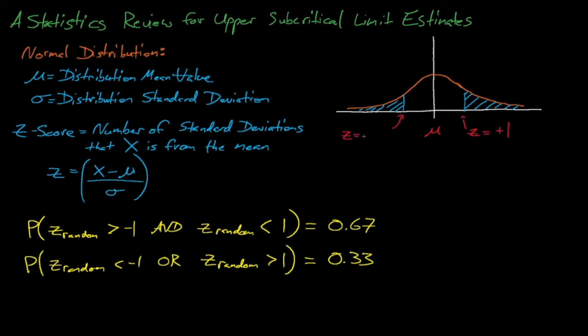Our goal in code validation is to understand how uncertainty in nuclear data introduces uncertainty into a system's calculated eigenvalue. While cross-section errors are not independent and may not follow a normal distribution, there are enough nuclear data parameters that it's reasonable to expect that uncertainty in cross-sections introduces an uncertainty in the system's eigenvalue that follows a normal distribution. Therefore, if our goal is to estimate the system's highest credible k-effective or its lowest credible c over e, then it's reasonable to assume that these uncertain quantities will follow a normal distribution.